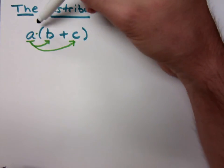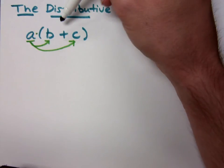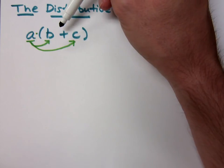When I distribute, I distribute across every term that's in the parentheses here. Make sure you understand that addition and subtraction will separate your terms. Multiplication acts as a glue that keeps things stuck together.